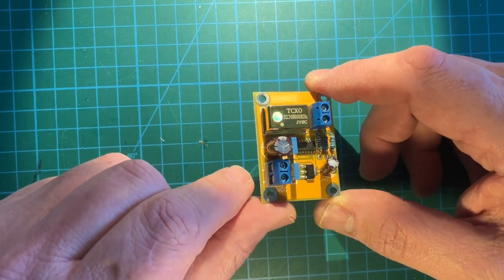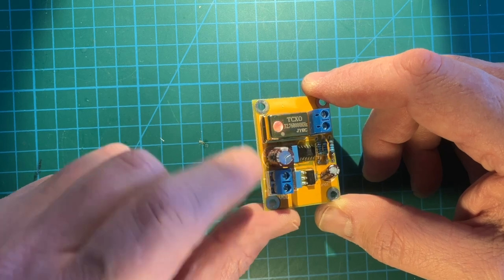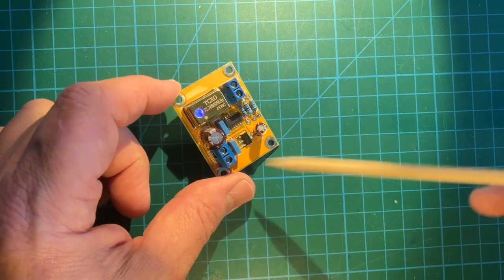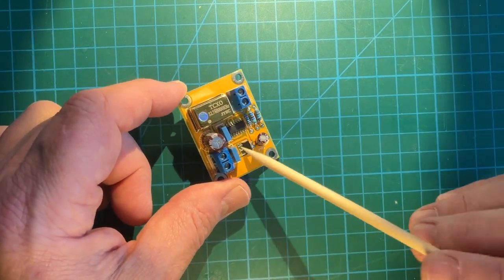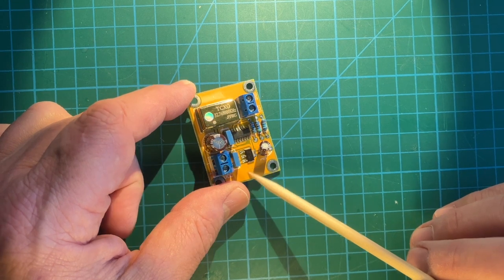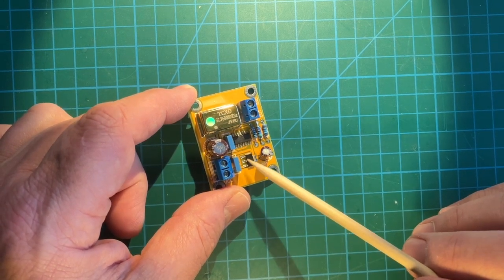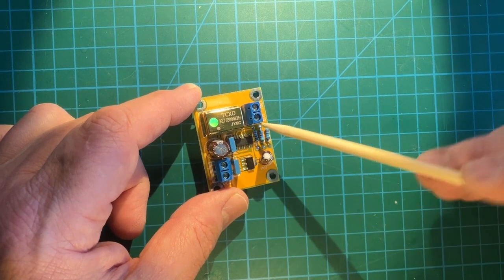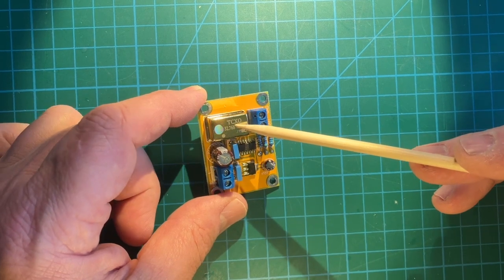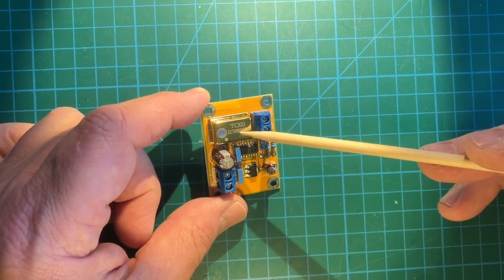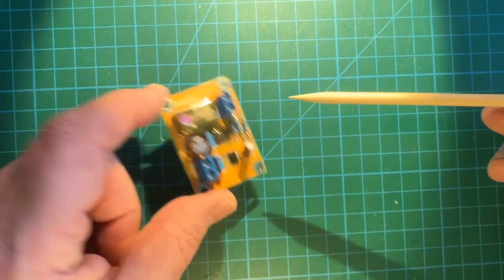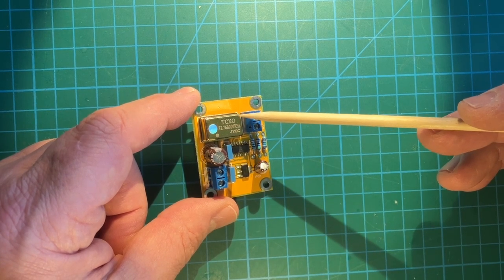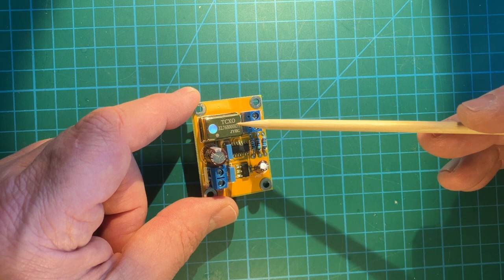Basically you put in anywhere from 7 to 10 volts into here. There's a low dropout voltage regulator here, which regulates it down to 5 volts even. That feeds the temperature compensated crystal oscillator module, which basically just has four pins: 5 volts in and ground and 32.768 kHz TTL levels output and ground.